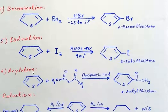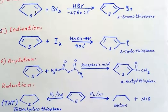In the acylation reaction, an acyl group is introduced at position 2 of thiophene by treating acetic anhydride with thiophene in the presence of phosphoric acid, giving 2-acetylthiophene. In the reduction reaction, when thiophene is treated with palladium catalyst and hydrogen gas, each carbon atom of thiophene gains one hydrogen, all double bonds become single bonds, and the product is tetrahydrothiophene.